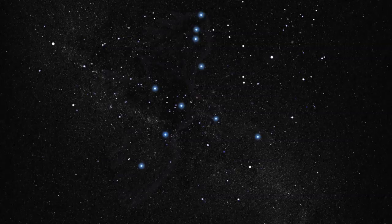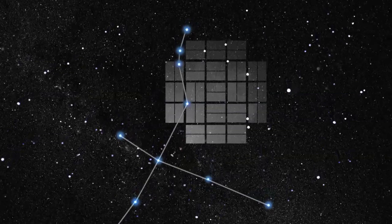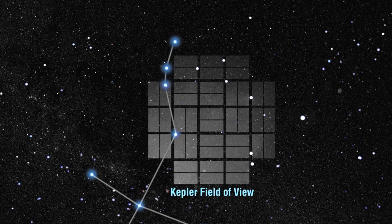Kepler is designed specifically to help answer this question. It stares at only one area of the sky and will do so for the entire mission. It is recording the light from over 100,000 stars similar to our Sun for over four years in the constellations of Cygnus and Lyra, an area rich in stars.